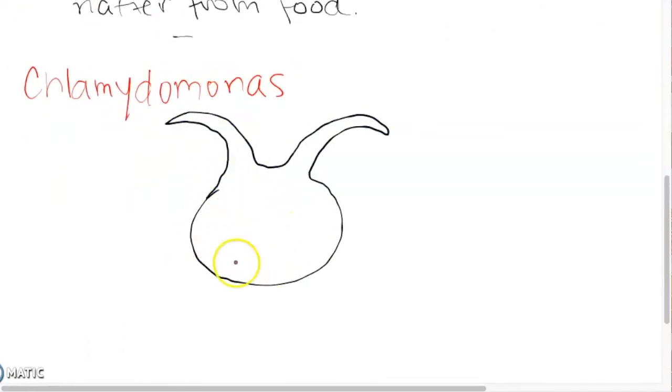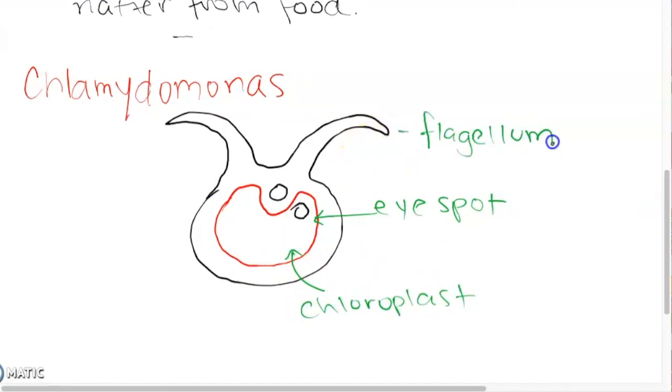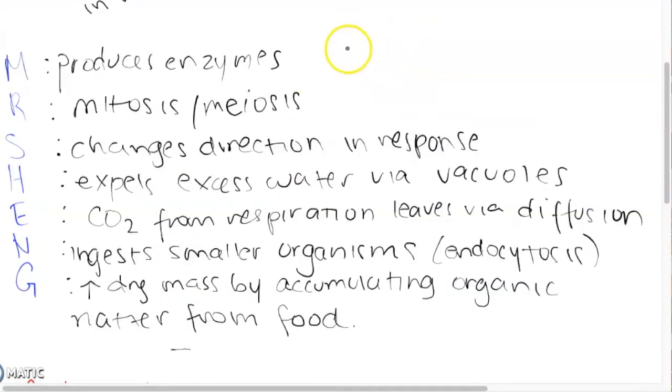The second one that we can do is the chlamydomonas. As you can see visually the chlamydomonas is different from the paramecium as it has a chloroplast meaning that it probably performs photosynthesis. It has an eye spot. The flagellum also has a nucleus and a cell wall instead of a plasma membrane. So if we compare how the chlamydomonas performs its life functions to the paramecium we'll see that they both have the same type of metabolism. They both produce enzymes. They both reproduce the same way through mitosis or meiosis. Their sensitivity or response is different because the chlamydomonas is actually able to sense light through the eye spot.